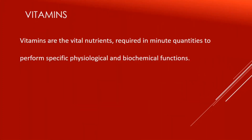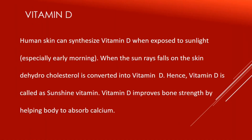Vitamins are vital nutrients that occur in minute quantities to perform specific physiological and biochemical functions. There are many vitamins needed by our body. Here we discuss about Vitamin D. Human skin can synthesize Vitamin D when exposed to sunlight, especially early morning sunlight. When sun rays fall on the skin, dehydrocholesterol is converted into Vitamin D. Hence, Vitamin D is called the sunshine vitamin. This vitamin improves bone strength by helping the body absorb calcium.